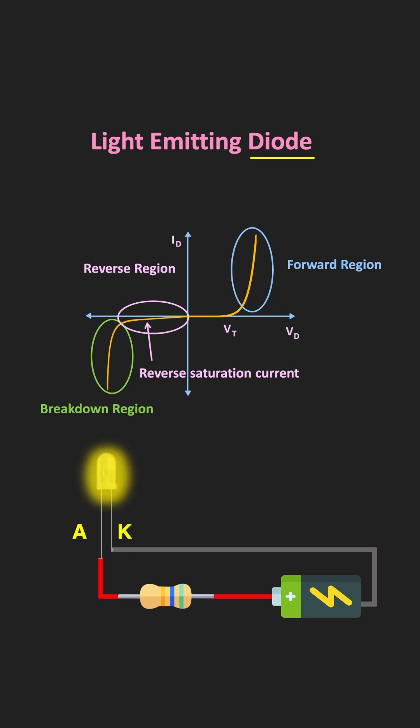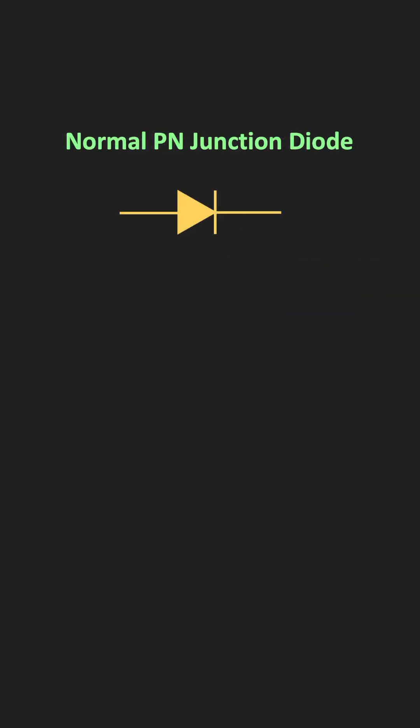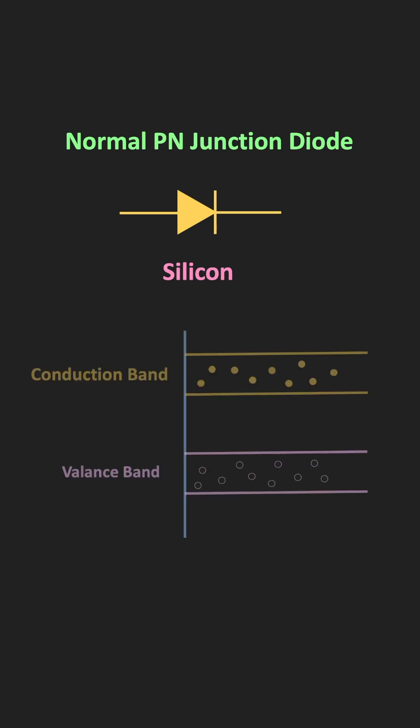But if you see the normal P-N junction diode, then it does not emit any light. The reason is that the normal P-N junction diode is made up of semiconductor materials like silicon and germanium. In the normal P-N junction diode, during the electron-hole recombination process, when the electrons from the conduction band combine with the holes in the valence band, they release the energy in the form of heat.